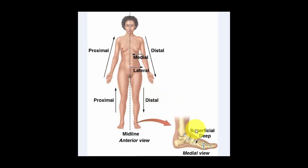The terms superficial and deep refer to body structures that are layered. Anything that is superficial is on top; deep is underneath. That's very common with muscles and we will cover those later.